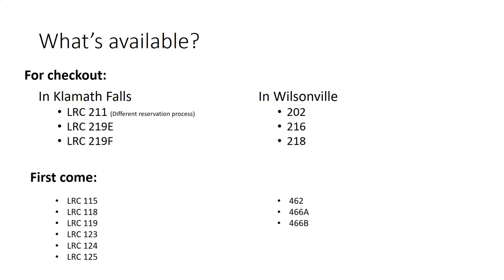This is our list of rooms. In Klamath Falls, for checkout, we have room 211, 219E, and 219F. Please note that room 211 has a different reservation process.